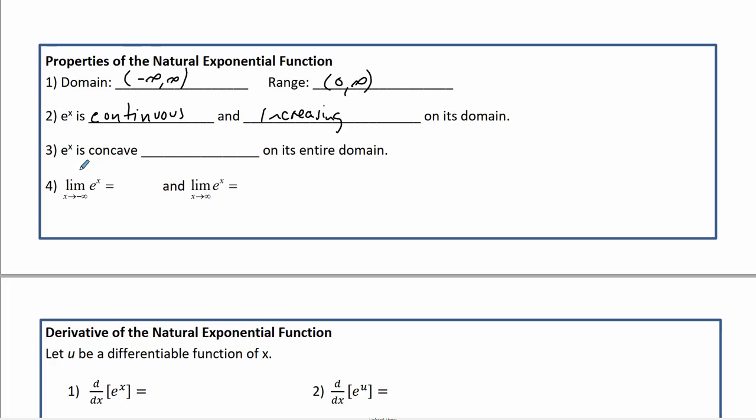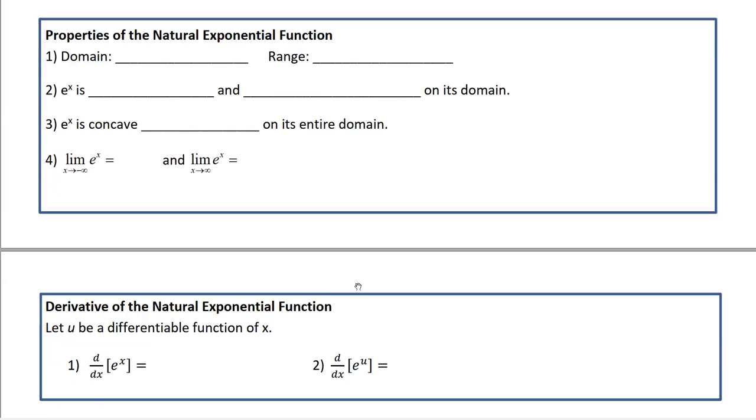e to the x is concave up, so it's always going to be concave up. And then the limit as it approaches negative infinity is going to be 0, that's that horizontal asymptote. But the limit as it approaches positive infinity is infinity. It goes on and up without bound forever. That's what that infinity means.